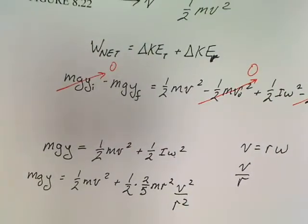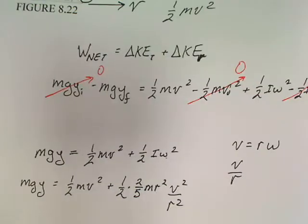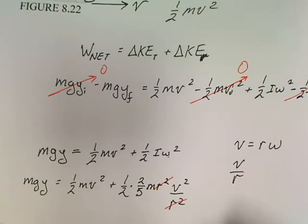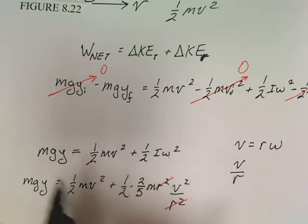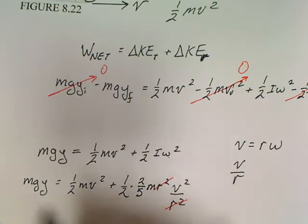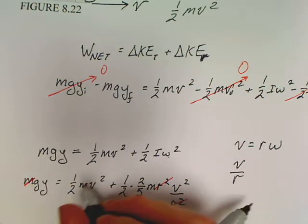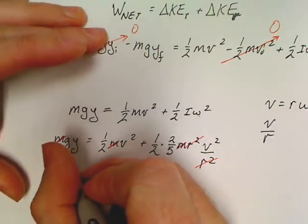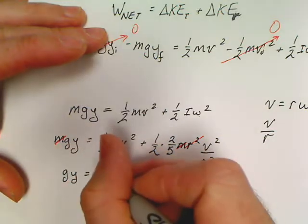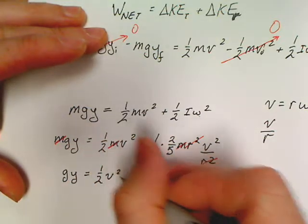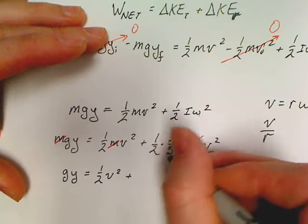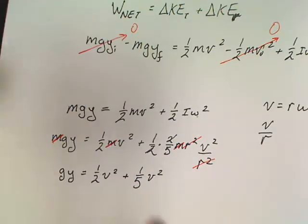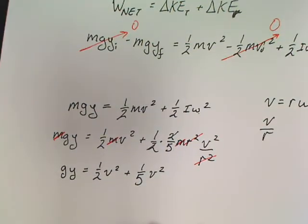Well, that's handy. All of a sudden I look, mass, mass, and mass in every single term. This big old beast of a problem is canceled out to gy equals 1/2 v² plus, what we got here, 2/5 v². There, there's all my problem.